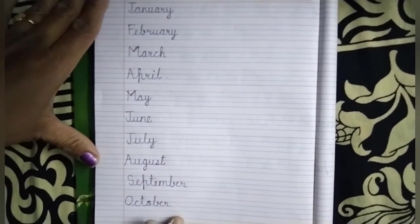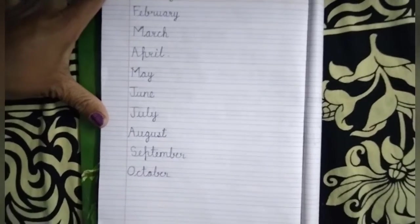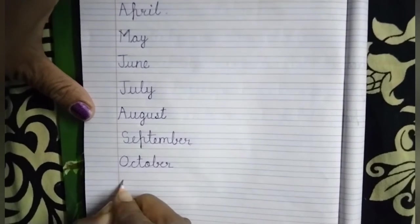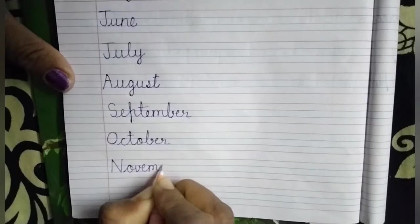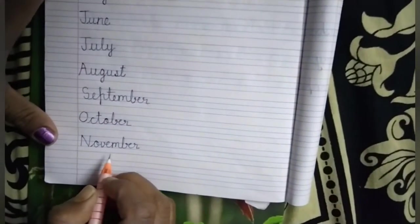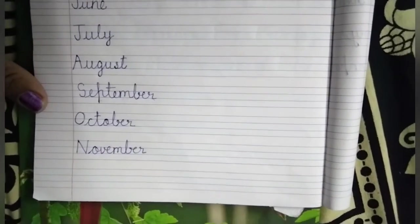And our next month is November. And November is our eleventh month. The spelling of November is N-O-V-E-M-B-E-R, November. And November is our eleventh month of the year.